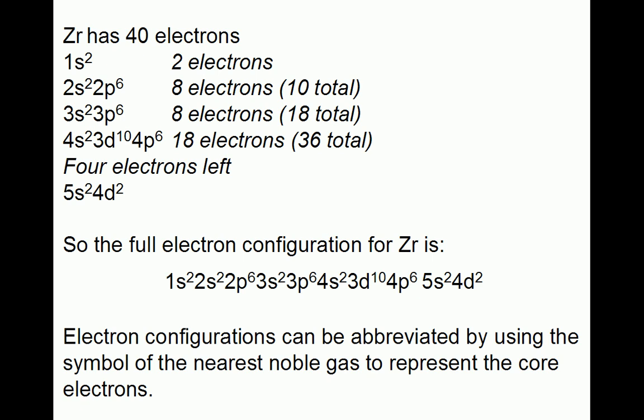And the next 8 go into the 4p subshell. Adding these 18 to the previous 18 gives us 36. We now have 4 electrons left. The next pair of electrons goes into the 5s subshell, and the final 2 go into the 4d subshell.